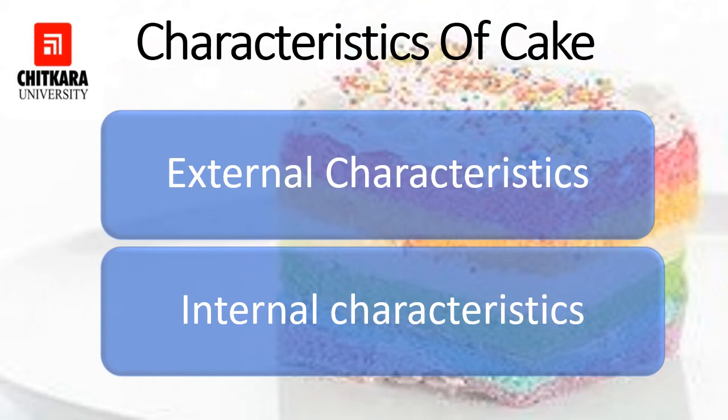That is external characteristics and internal characteristics. As per the name suggestions, external characteristics are the characteristics which can be seen from the outer side, and internal characteristics are the characteristics which can be seen after cutting your cake. In this session, we are going to discuss about both the external and internal characteristics of your cake.